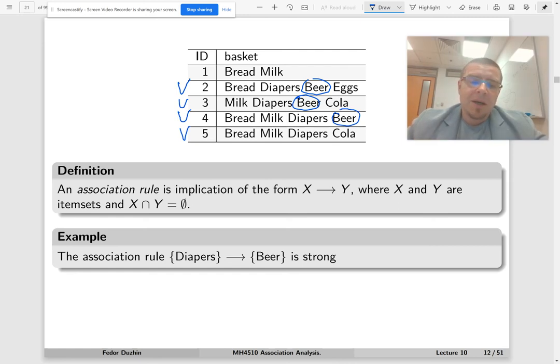Which means that in 3 out of 4 transactions that contain diapers, 3 also contain beer. This association rule is quite strong. Basically, there is a 75% chance that if your itemset contains diapers, then it will also contain beer.